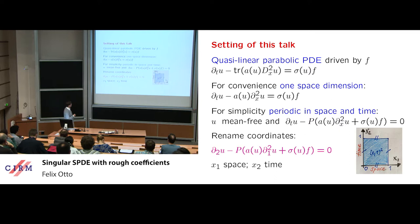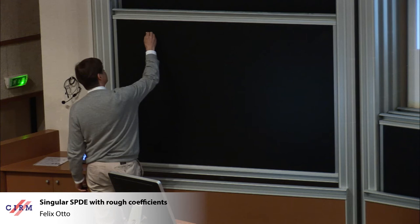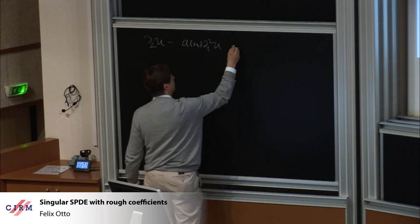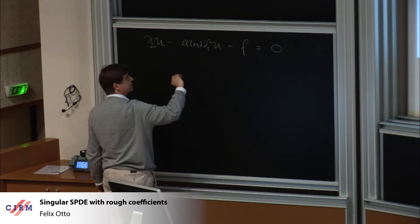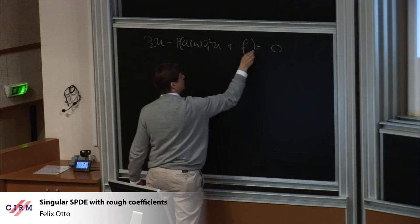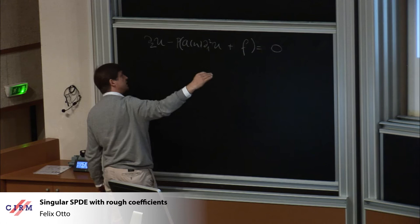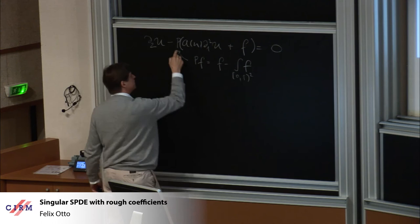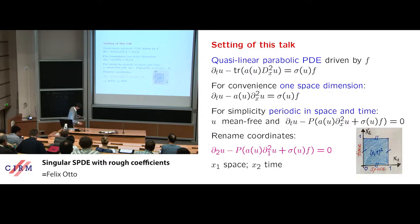To drive the point home, we rename the spatial variable as x1 and the time variable as x2, really thinking of this as more of an elliptic operator. Since we're dealing with something periodic in space-time, we put the projection P onto mean-zero functions, where P of F is F minus the mean value of F. In most of the talk I will not write down P in order to simplify notation.